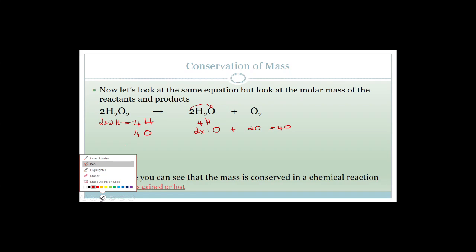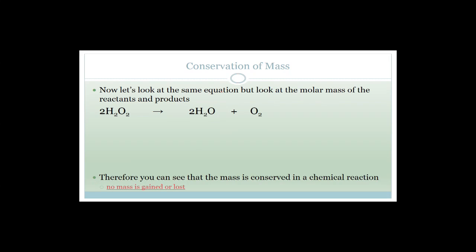We proved that the number of atoms on the left-hand side of the reaction always has to equal the number of atoms on the right-hand side. Now we're going to do it with respect to molar mass. We know the molar mass of hydrogen is 1 and the molar mass of oxygen is 16. So on the left-hand side: 2 times 1, plus 2 times 16. That's 2 plus 32, giving us 2 times 34, which is 68.